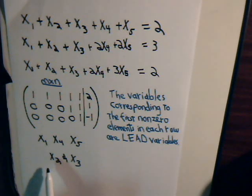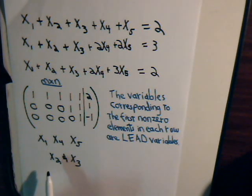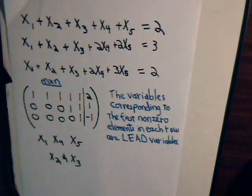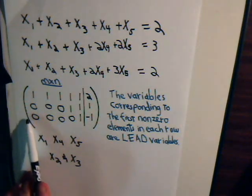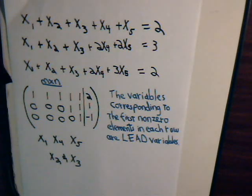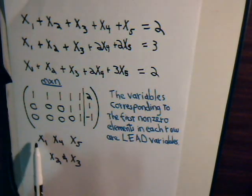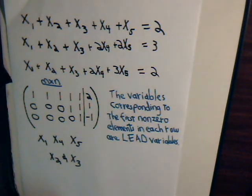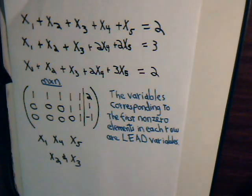As we saw in the last video, that means you can have an infinite number of solutions. So with an underdetermined system, you either have no solution — for example, we might have a whole row of zeros here and a non-zero number here, in which case there is no solution — or it's going to be in a form like this, where you have some lead variables, but the free variables can have any value whatsoever, giving you an infinite number of solutions.